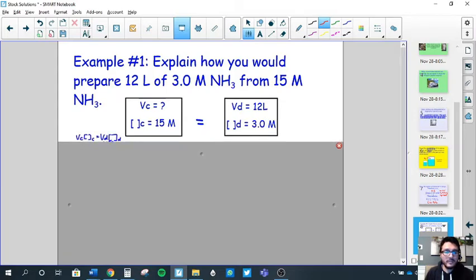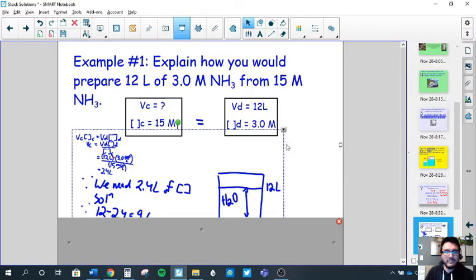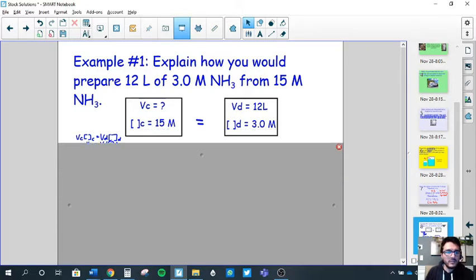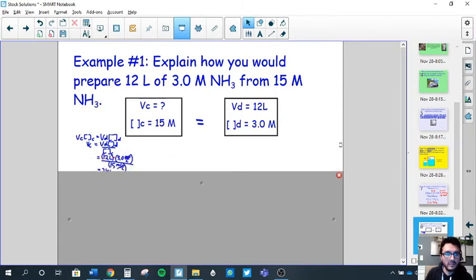Here's our formula. So VC, concentration C, volume concentrated times concentration concentrated equals same for the dilute version. We're going to solve for using a bit of grade 9 math. VC is then equal to VD CD over CC. Plug in your known values, 12 liters times 3 moles per liter divided by 15 moles per liter, and we get 2.4 liters.